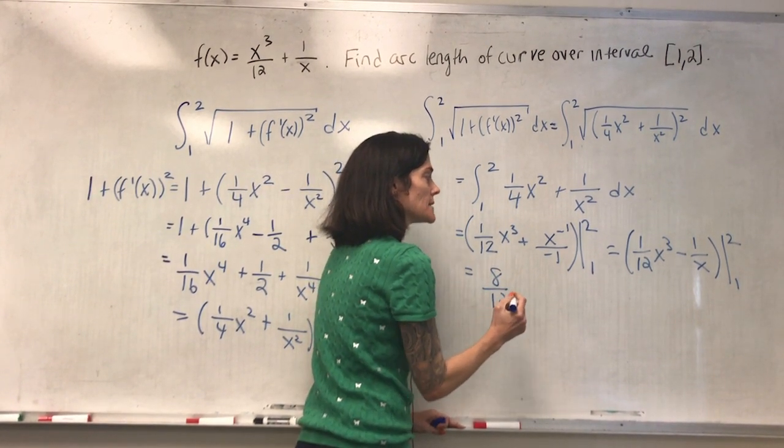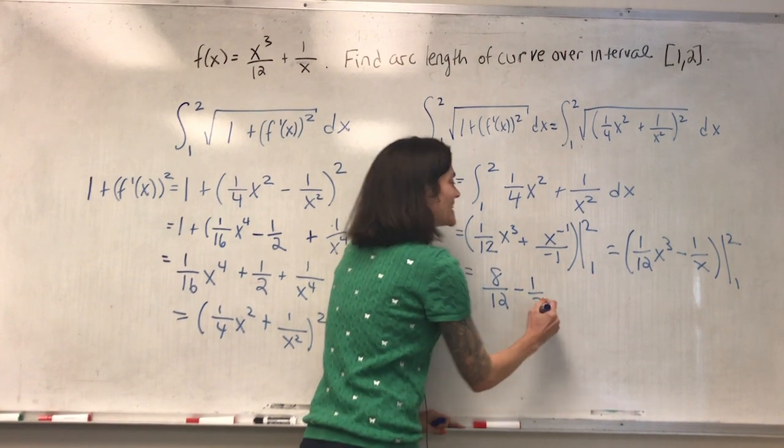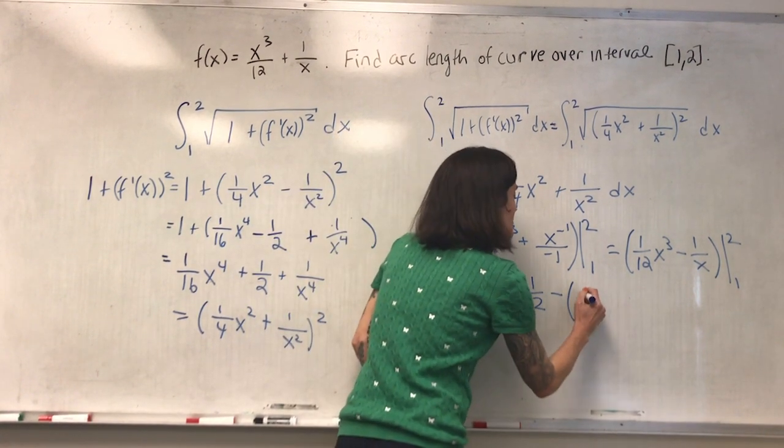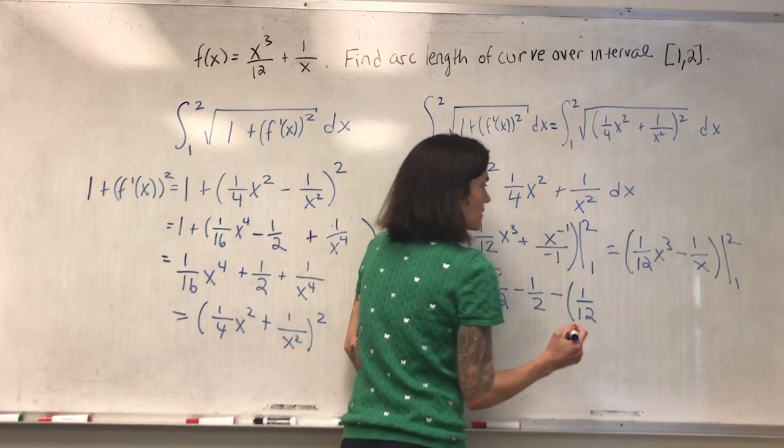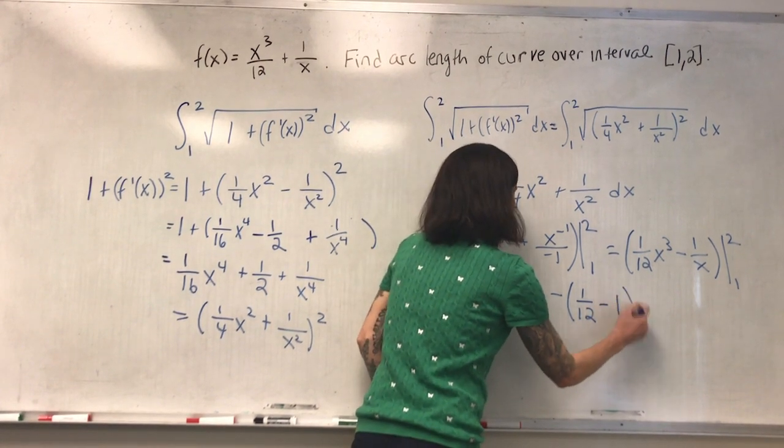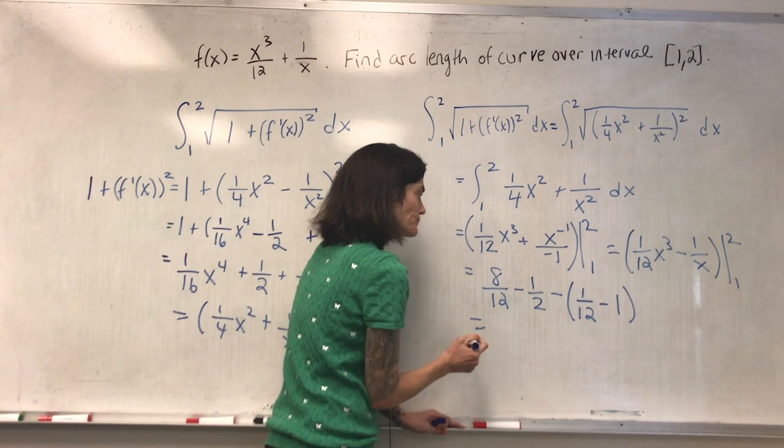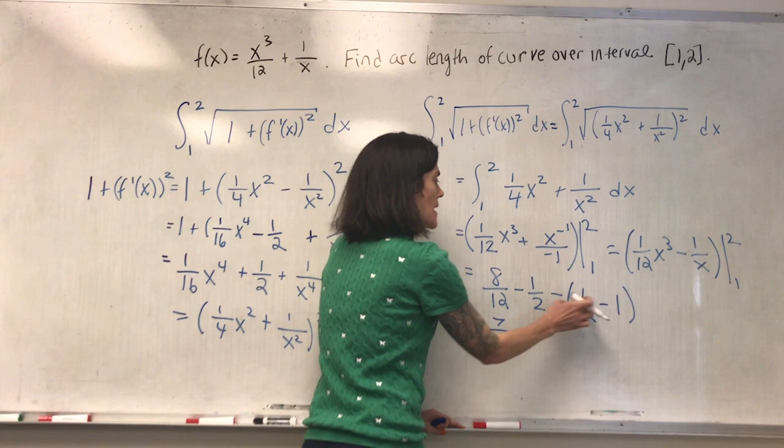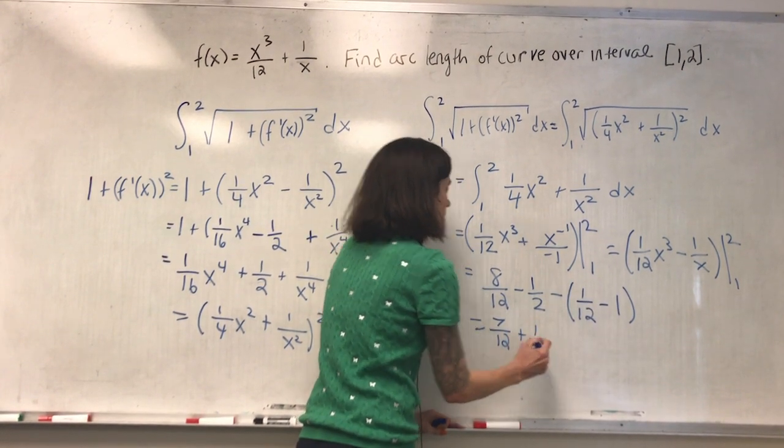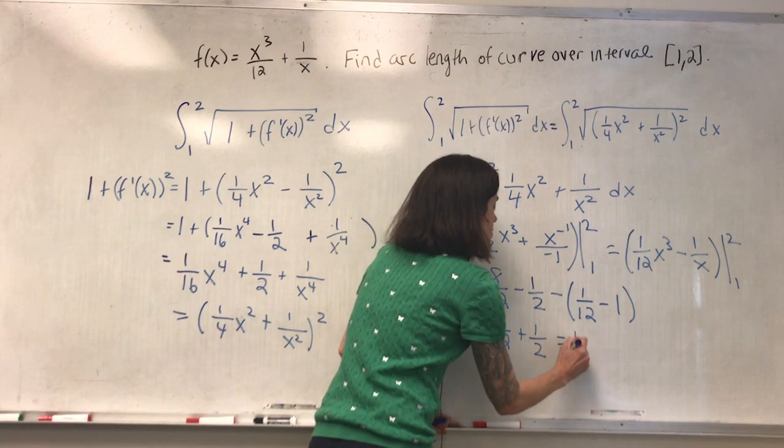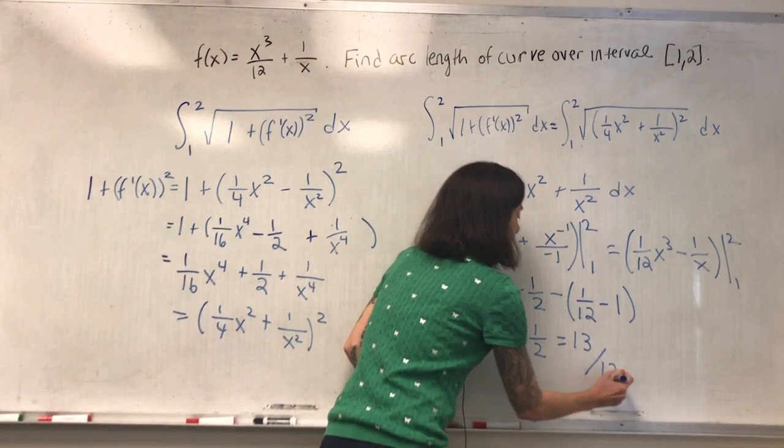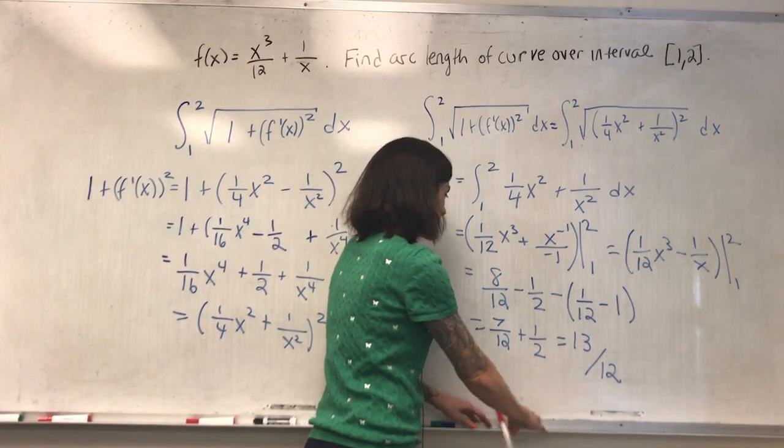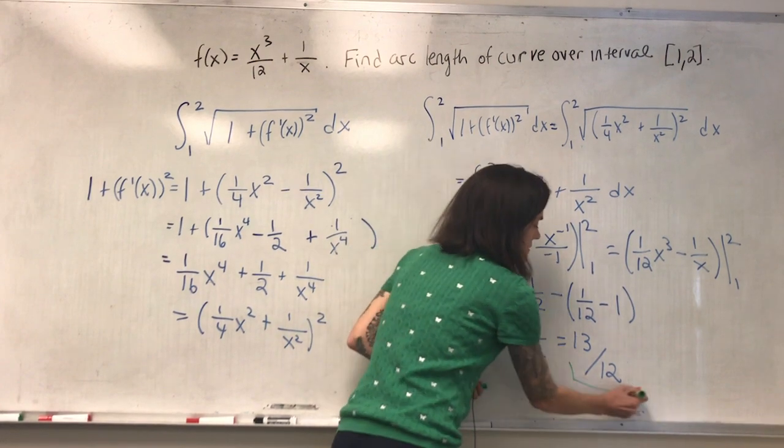And we get, so two cubed is eight. Then we subtract a half minus, we evaluate at one. This is a 12th minus one. So we're left with seven over 12. This is minus a half, plus one would be plus a half. That's the same as six over 12. We get 13 over 12. And this would be the arc length between one and two for this function.